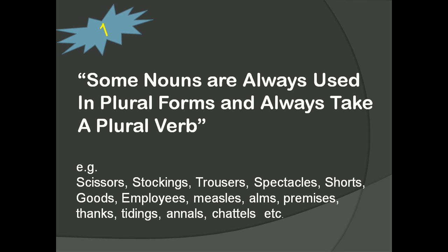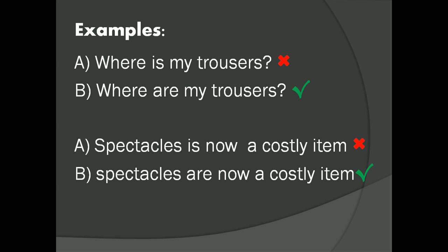Let us start with the first trick. Some nouns are always used in a plural form and always take a plural verb. For example, scissors, stocking, trousers, spectacles, shorts, goods, employees, etc. These are plural nouns. Whenever we are using these nouns in a sentence, they always take a plural verb.